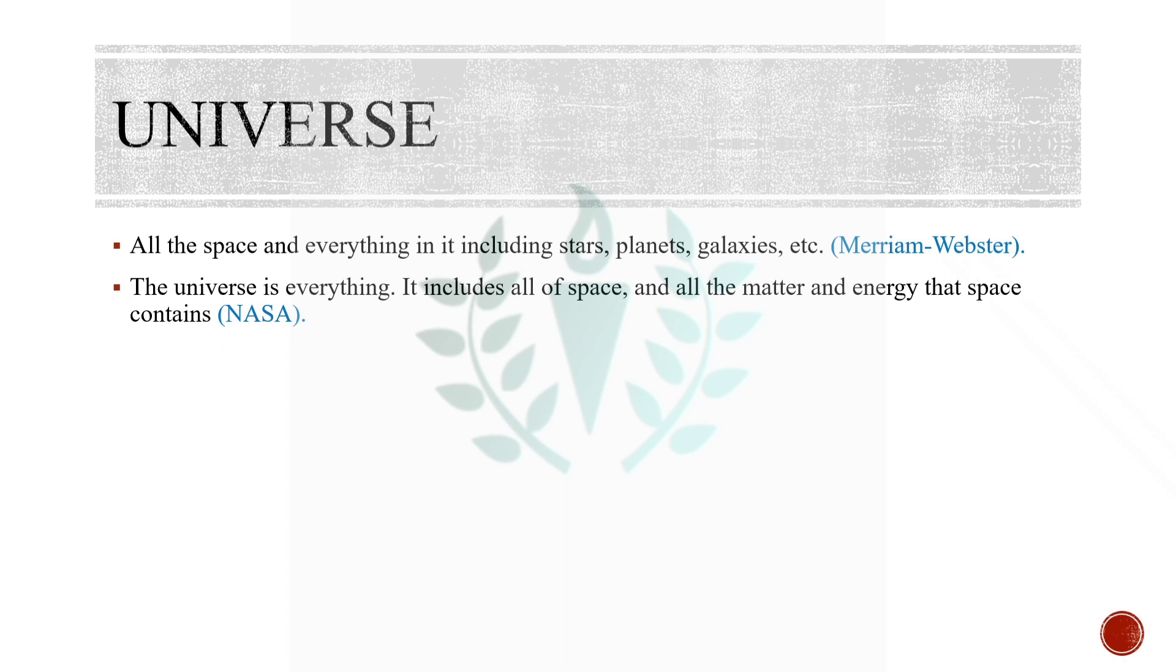The outline of our presentation is universe, age of the universe, galaxy, types of galaxies, the Milky Way galaxy, and stars. Universe is the space and everything in it including stars, planets, and galaxies. It even includes time itself and of course you, me, Earth, moon, and everything.